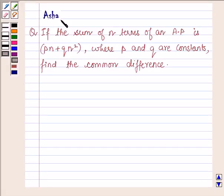Hello and welcome to the session. I am Asha and I am going to help you with the following question: If the sum of n terms of an AP is Pn plus Qn square, where P and Q are constants, find the common difference.